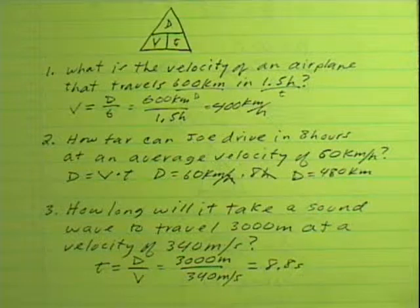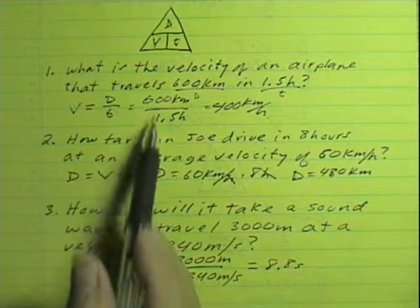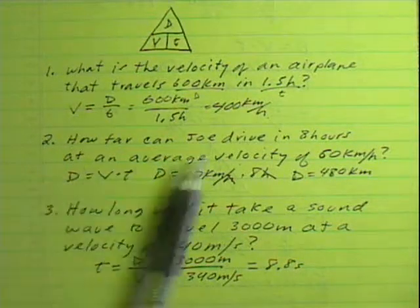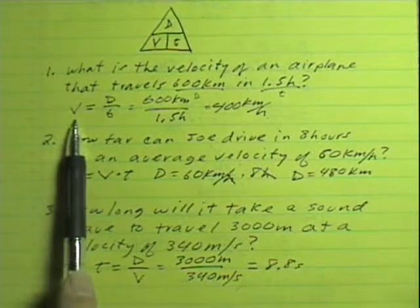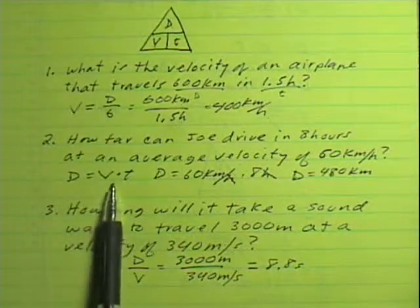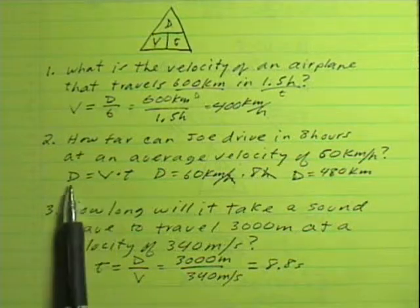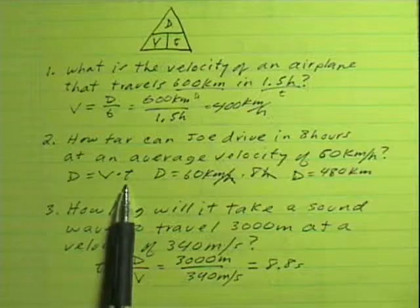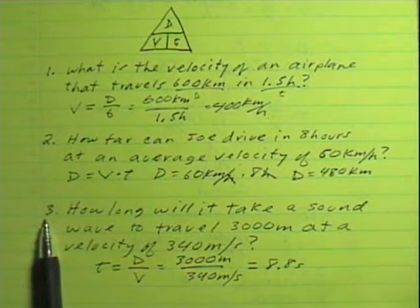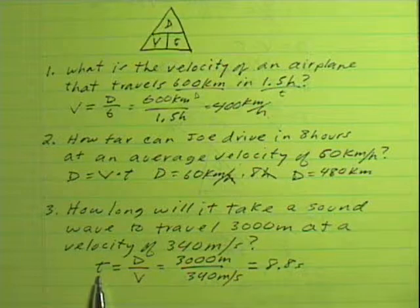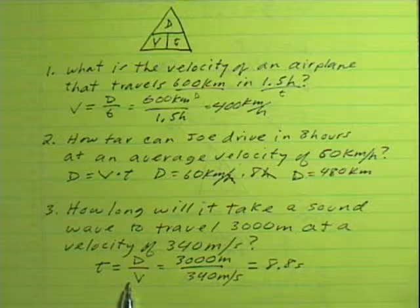Hopefully you got all three of those problems right. In the first problem, velocity was displacement divided by time. In the second problem, we rearranged the equation to solve for displacement — displacement is velocity times time. In the third problem, we rearranged again to solve for time — time is displacement divided by velocity.